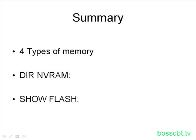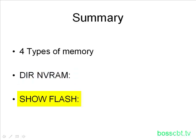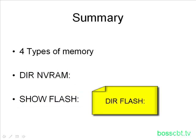To summarize, we talked about four different types of Cisco switch memory: ROM, NVRAM, flash, and RAM. We also looked at two commands: 'dir nvram:' to check out your NVRAM, and the 'show flash' command to view your flash memory. Note that you can also use the 'dir flash:' command as well.